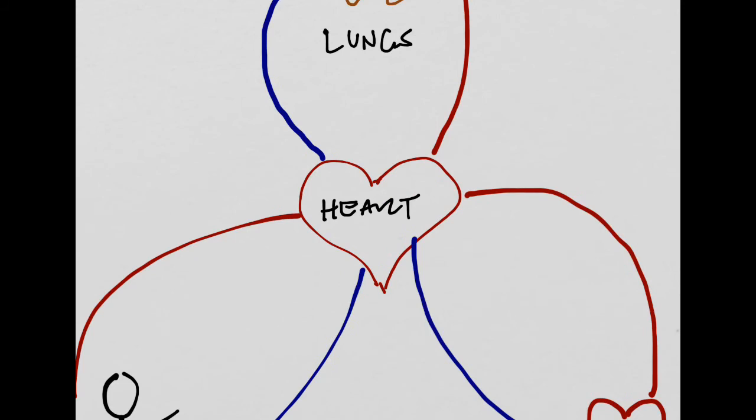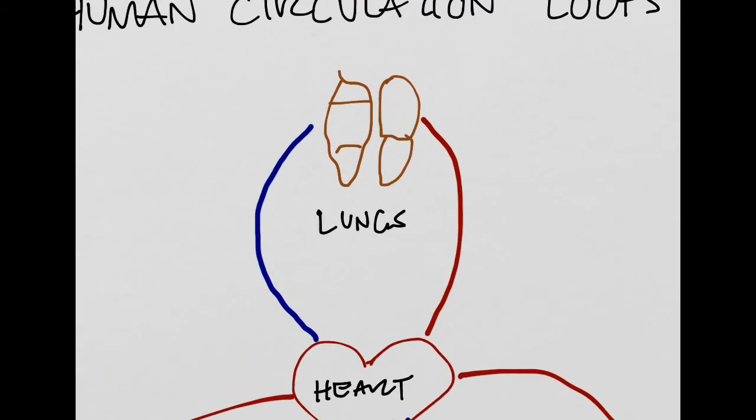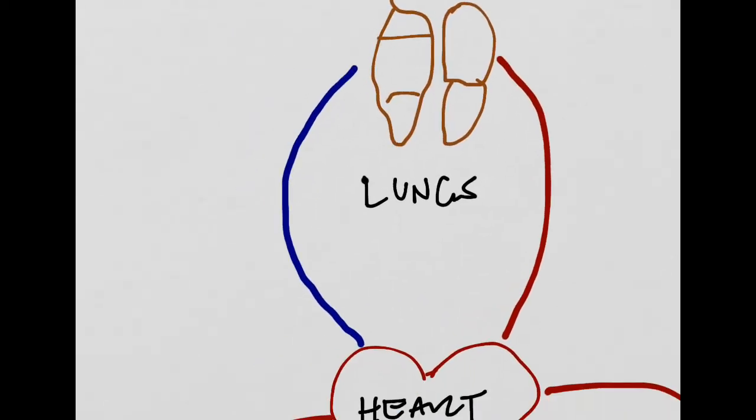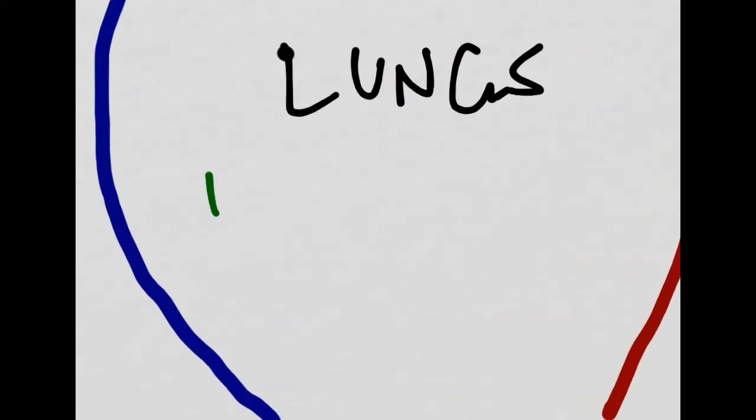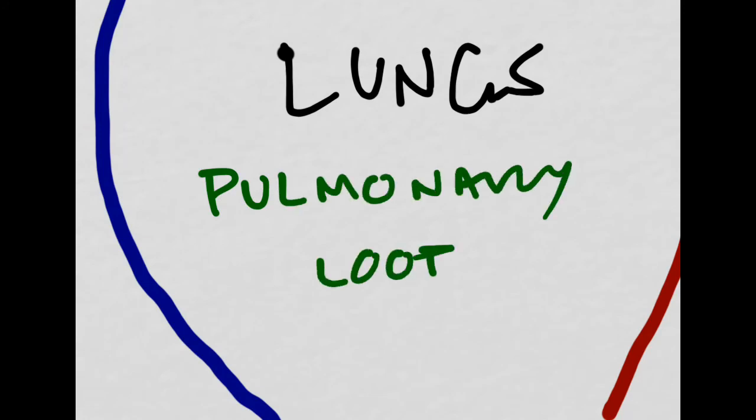These are the three circulation loops, which have very specific names. So, I'm going to use green for the names of these things. This loop up here is called the pulmonary loop.